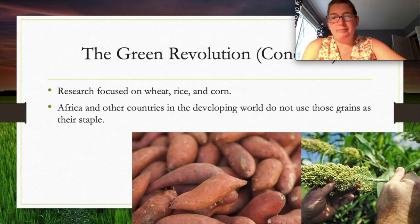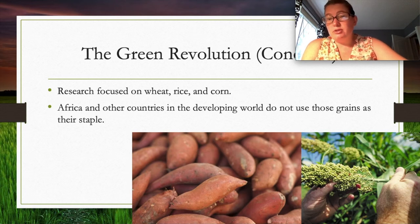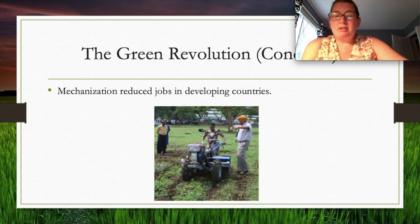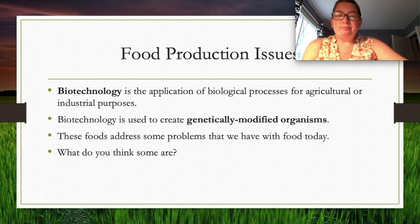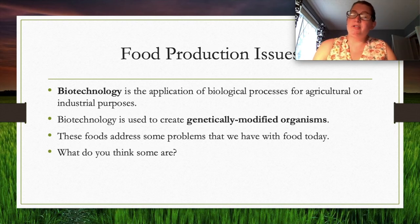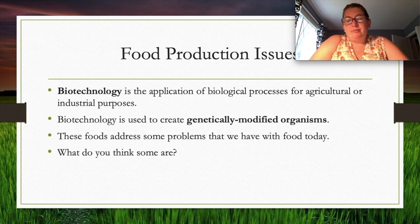Green Revolution research mostly focused on staple crops — wheat, rice, and corn. However, countries in Africa and the developing world often don't use these as staples because their soils don't support growing them. Mechanization also reduced jobs in developing countries. Biotechnology — the application of biological processes for agriculture and industry — is used to create genetically modified organisms (GMOs) that address some of today's food problems.